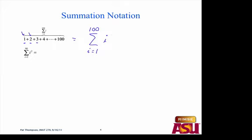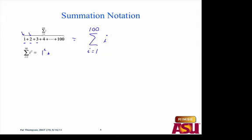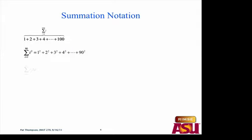This says: add up the square of the integers, every integer squared, from 1 to 90. That's what we said, right? How about this one — you can do this.